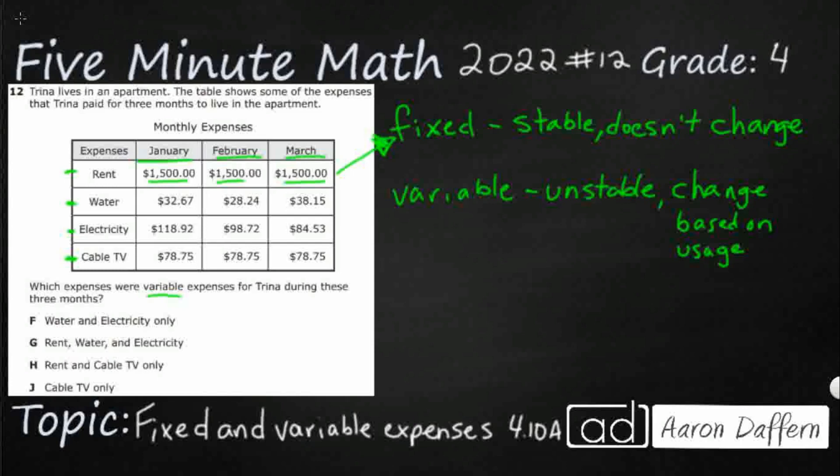Now take a look at this water bill - 32, 28, 38. These can change. So these are going to be variable based on how much water you use. Maybe you ran your dishwasher more in March than you did in February. Maybe if you're at a house you water the lawn and that's going to cost water. Maybe you took longer showers. All of these things are going to change how much you use your water. So this is going to be variable.